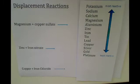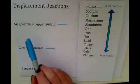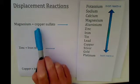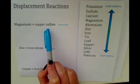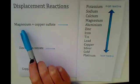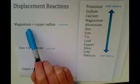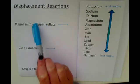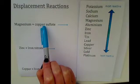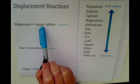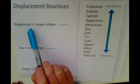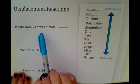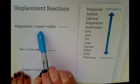This video is about displacement reactions. In the reaction here, we have magnesium plus copper sulphate. In a displacement reaction, what happens is a more reactive metal comes in and displaces or kicks out a less reactive metal. For example, magnesium in this example is the reactive metal and copper is less reactive than magnesium.